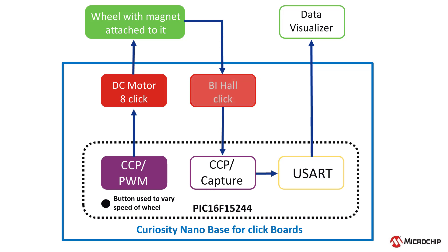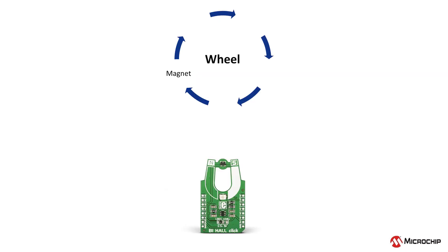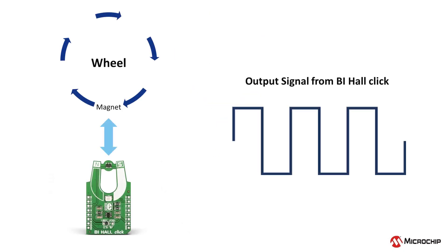The addition of the bi-Hall click allows for a simple solution to determine the speed and distance covered by the wheel. The bi-Hall click can detect magnetic poles and will output a high logic level when exposed to a south pole and a low logic level when exposed to a north pole. To detect rotation, a magnet attached to the wheel will pass near the sensor, which will generate a pulse. These pulses will be captured by the Capture Compare PWM peripheral, also known as the CCP, to determine speed and distance.